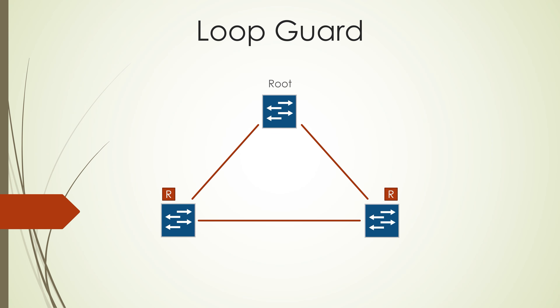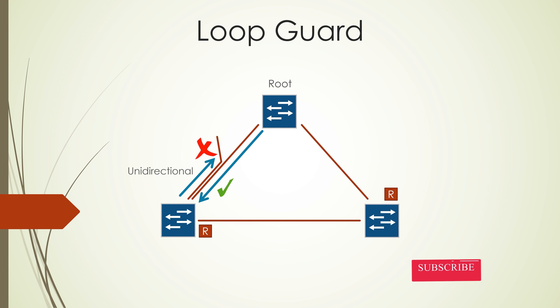So when would this become an issue? Well, consider an example where we might have a unidirectional link. This is a port that will be able to send BPDUs out, but it won't be able to receive any from any neighboring switches, and of course this could lead to a loop within the topology.